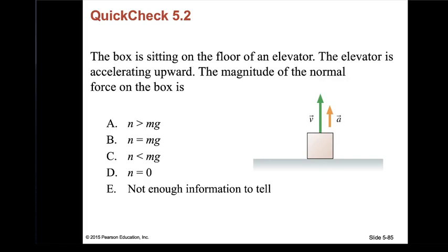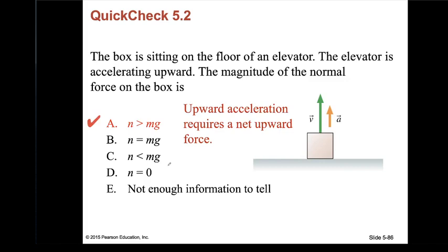Quick question: a box sits on the floor of an elevator accelerating upward. Is the normal force on the box greater than, equal to, or less than mg? Since acceleration is upward, the net force is upward, so the normal force must be greater than mg to produce that upward net force. The answer is A: N > mg.